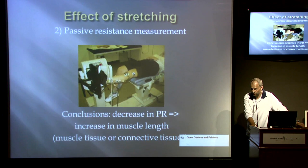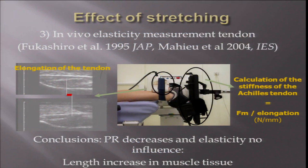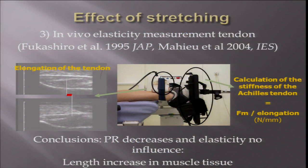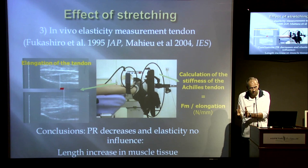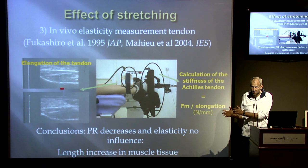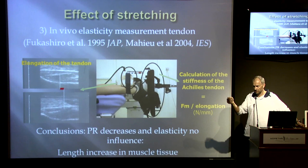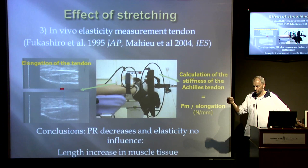For evaluating that, you need another measurement — a real-time ultrasound measurement where you can calculate the stiffness of the connective tissue. So if you change the stiffness, you change something in the tendon. If your passive resistance decreases but you did not find any change in the tendon itself, you can say the change we found is in the muscle. By combining the results of these three measures, you can finally identify where the increase in range of motion comes from.